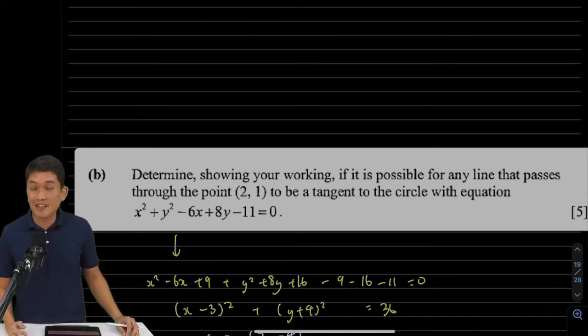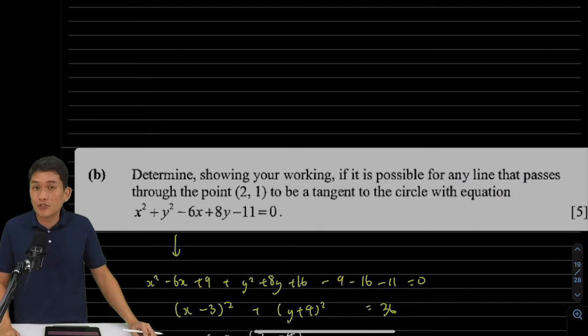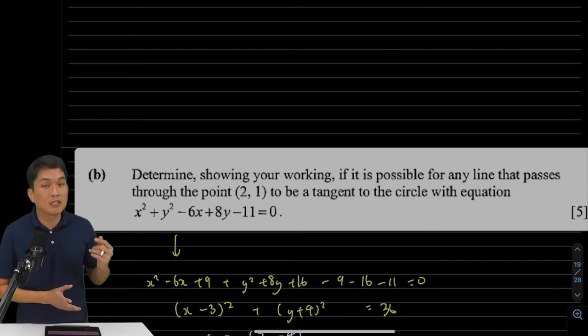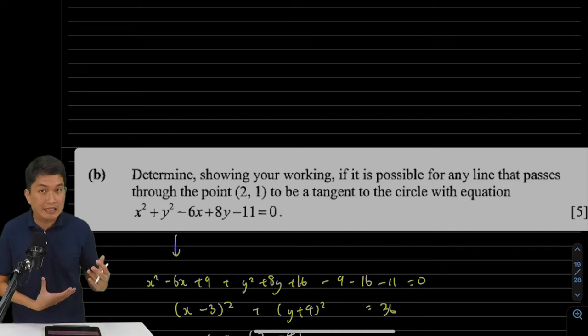Hello and welcome back to question 7b. This question is on circles. So this question is quite interesting as you'll see later on because it's not one of your usual circle questions. This question says that if you're given two pieces of information: number one, the equation of a circle, and number two, the coordinates of some point, then can you tell me if it's possible to draw a tangent to the circle that passes through that point?